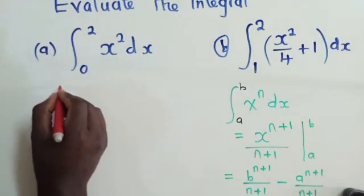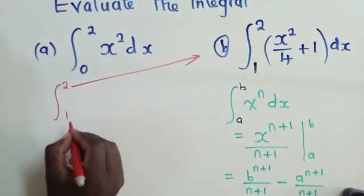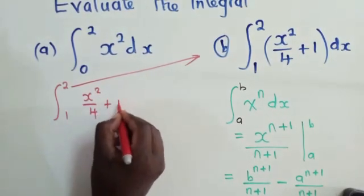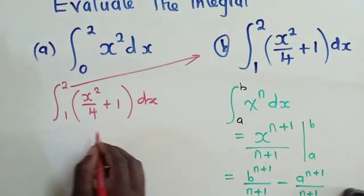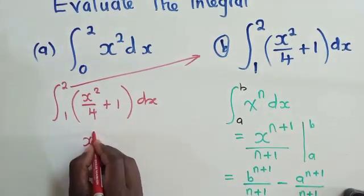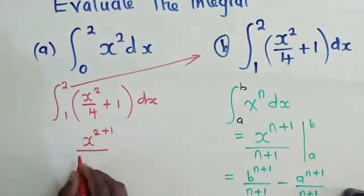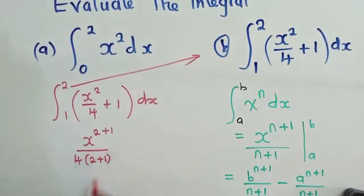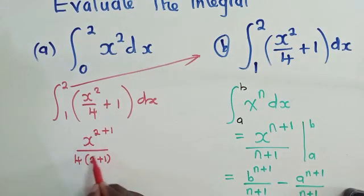For question b, using the same ideas that we have, we're going to say integral, the limits from 1 to 2, x squared over 4 plus 1, dx there. So the same idea: get this, add a 1 and divide. You see there's a 4 here, so put that 4 there and multiply it by the new power.